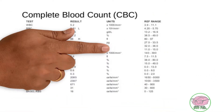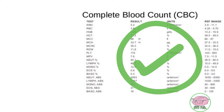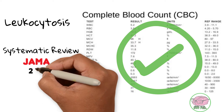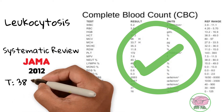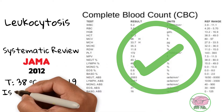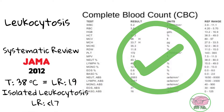In the test results we have a normal complete blood count. These patients can sometimes present with leukocytosis, which is an increase in white blood cells. A systematic review in 2012 established that a temperature of 38 degrees Celsius or an isolated leukocytosis are not enough to determine bacteremia — bacteria in the bloodstream.